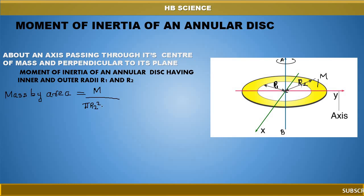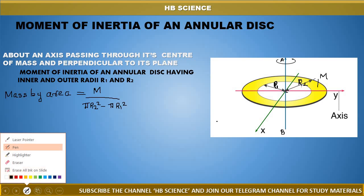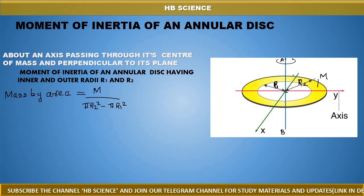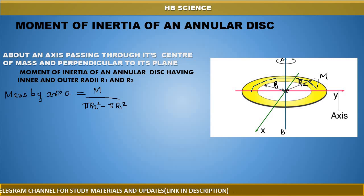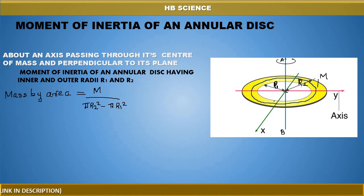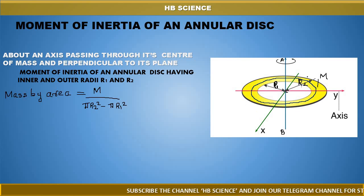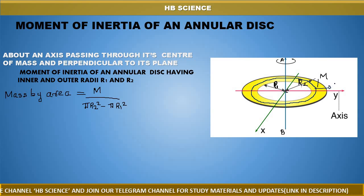Now assume a ring — I will assume an elementary ring. Every element of the disk can be treated as a ring. So I assume this ring is an elementary ring. The thickness of the elementary ring is dx.